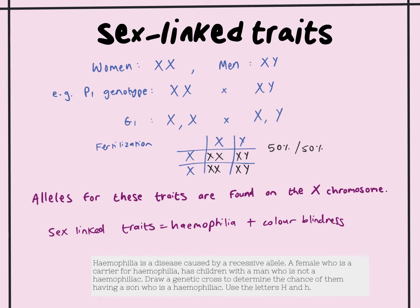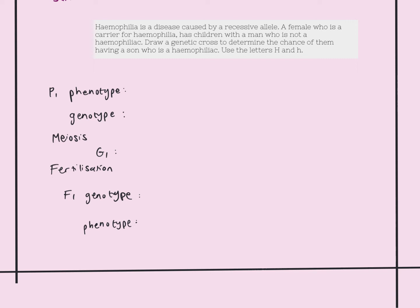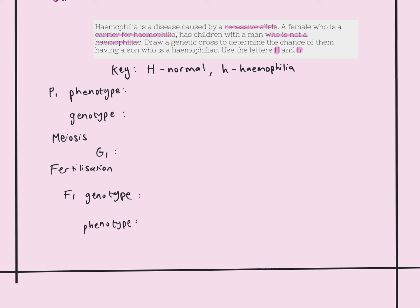Let's have a look at an example. Always use your highlighter to identify the information you're given. Hemophilia is a disease caused by a recessive allele. A female who is a carrier for hemophilia has children with a man who is not a hemophiliac. We need to draw a genetic cross to show the chance of having a son who is a hemophiliac, using capital H and small h. Small h represents hemophilia; capital H represents the normal allele.